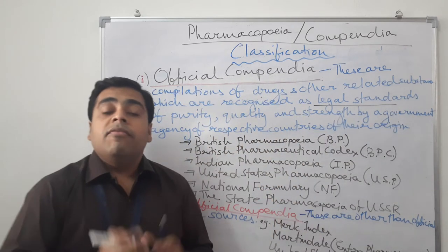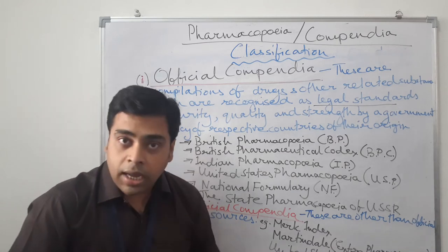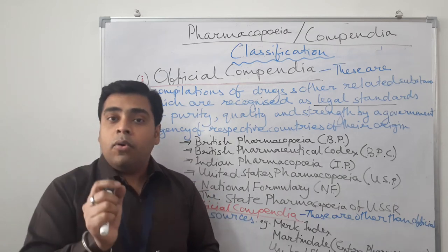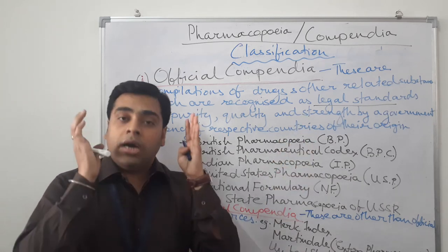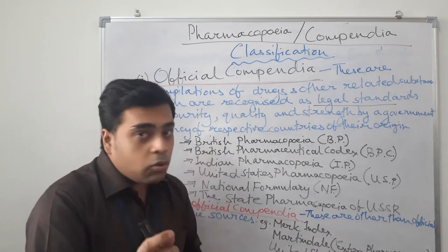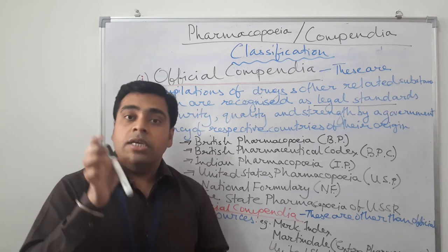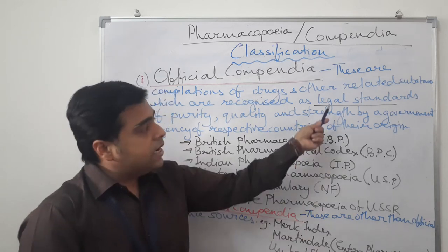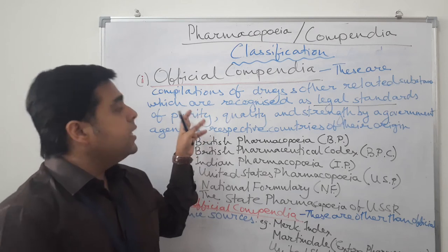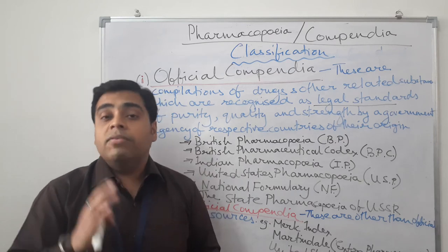This is very important — the official pharmacopoeias are directly published by the government or by government agencies of that particular country of origin, and they are known as legal standards. You have to put the name of that pharmacopoeia from where you have taken that formula or used that particular thing. It is designed as per the legal standards, which gives us information about quality, purity, and standards as laid down by the government agencies of that country.